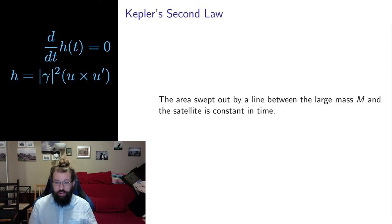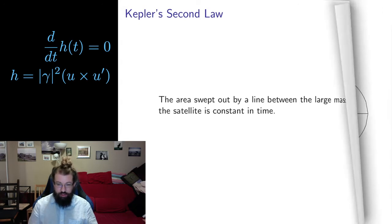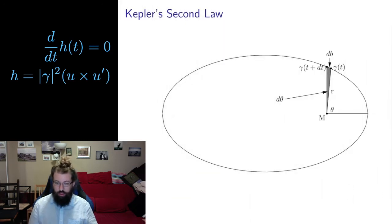So the second law says the area swept out by a line between the large mass and the satellite is constant in time. What's going on with sweeping out area? Well here's the movement of gamma, I'm thinking about gamma moving counterclockwise around this orbit. Over a little period of time it sweeps out a little area, so you can see this shaded area on the page here, and as it moves further it sweeps out more and more area. The idea is that the rate at which this area gets added to the orbit is fixed in time.